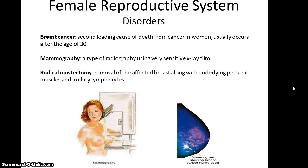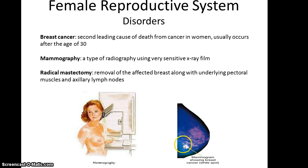Some disorders associated with breasts include breast cancer, which is the second leading cause of death from cancer in women. This usually occurs after the age of 30. Women at a certain age are asked to undergo annual mammograms using mammography, which is basically a type of radiography using very sensitive x-ray film. The woman's breasts are flattened as much as possible so they can detect a denser area where cancer would be.